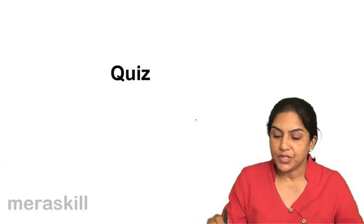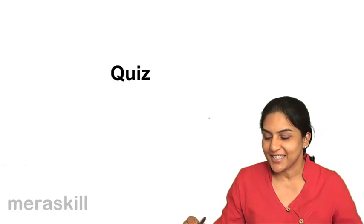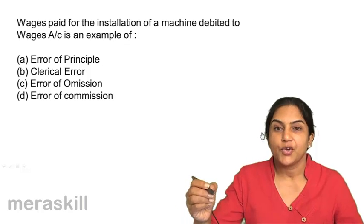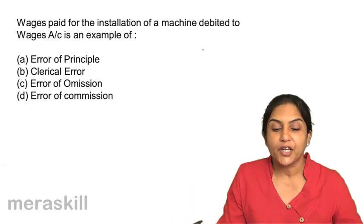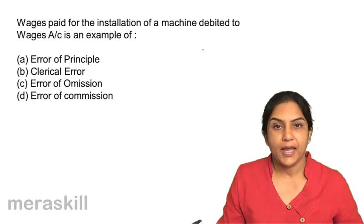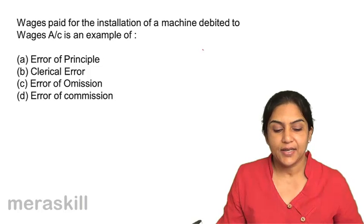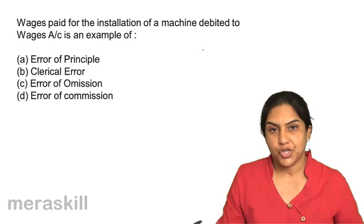Let us take a short quiz to test our understanding so far. Wages paid for the installation of a machine, debited to wages account, is an example of: A. Error of principle, B. Clerical error, C. Error of omission, or D. Error of commission.